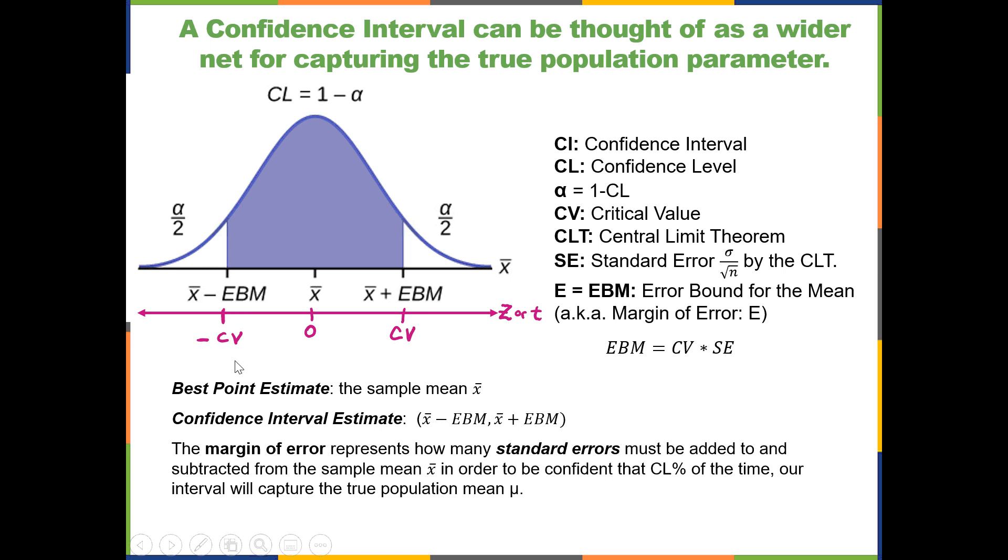If you use the negative critical value to calculate your margin of error, then you'll end up with your boundaries in reversed order.